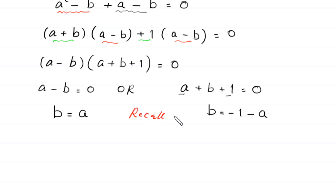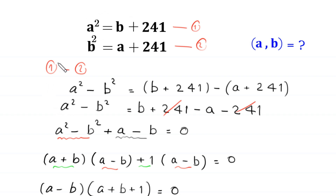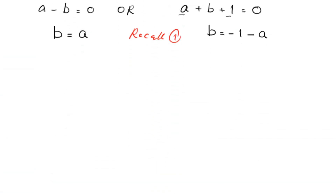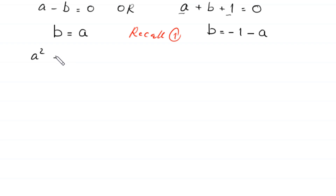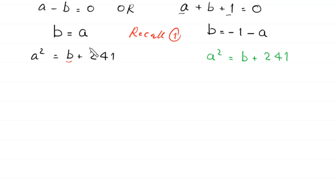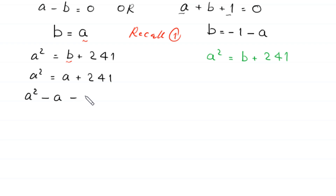Now we recall equation 1: a squared equals b plus 241. For the first case, we replace b with a, so the equation becomes a squared equals a plus 241. Moving terms to the left-hand side gives a squared minus a minus 241 equals 0. This quadratic equation is not factorable, so we solve it using the quadratic formula.